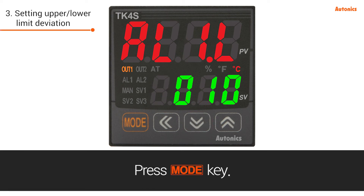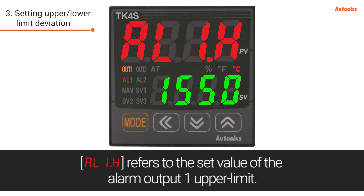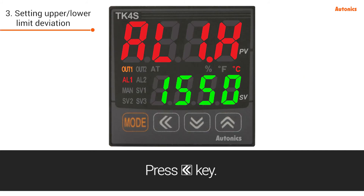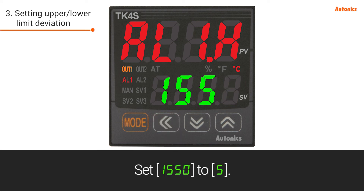Press the Mode key. AL1.H refers to the set value of alarm output 1 upper limit. Press the Left key and set the value from 1550 to 5.